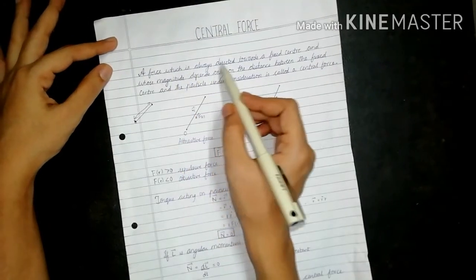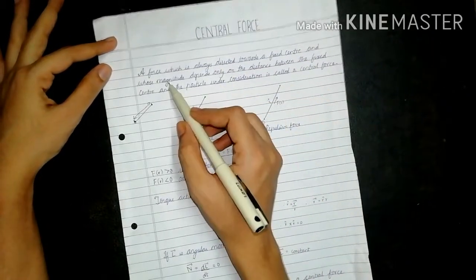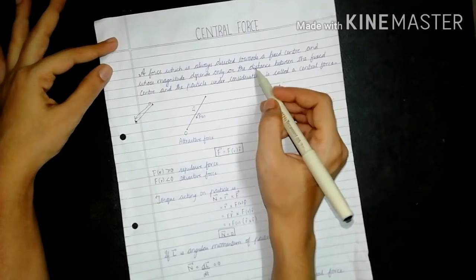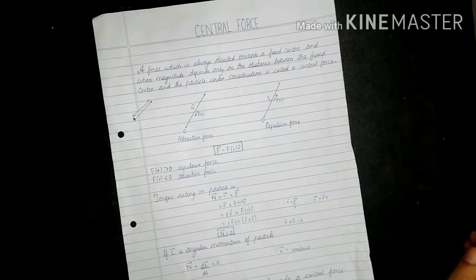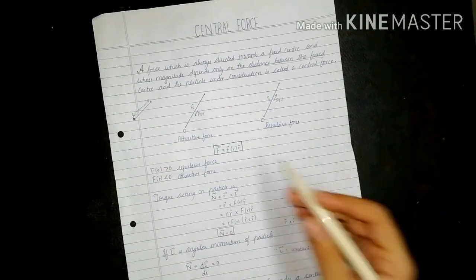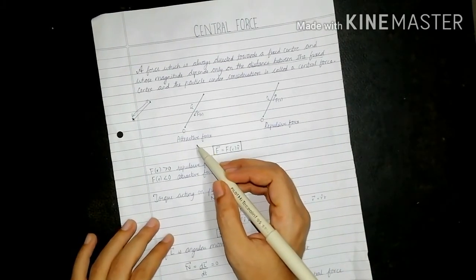A force which is always directed towards a fixed center and its magnitude depends only on the distance between the fixed center and the particle under consideration is called a central force. Now the attractive force is represented in this manner.